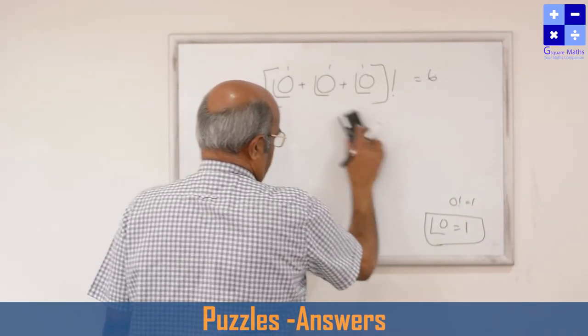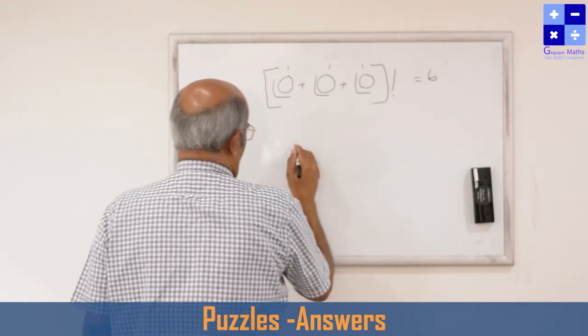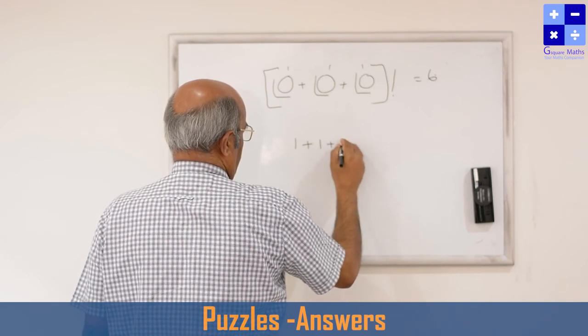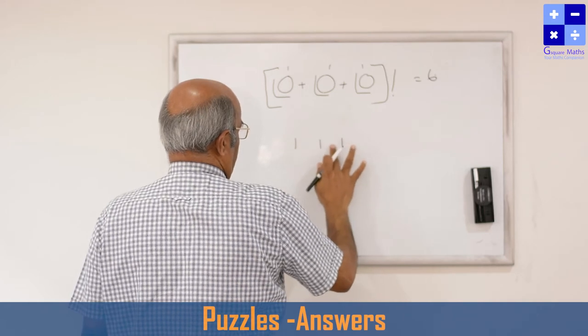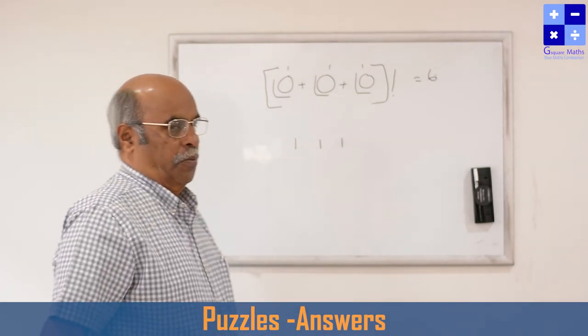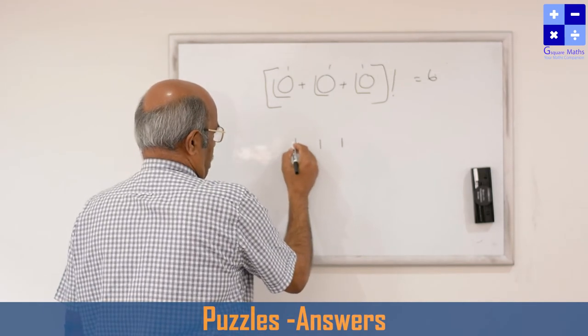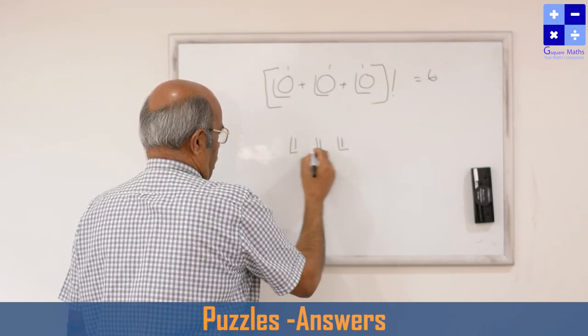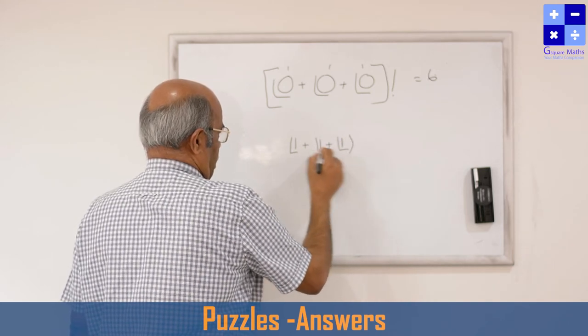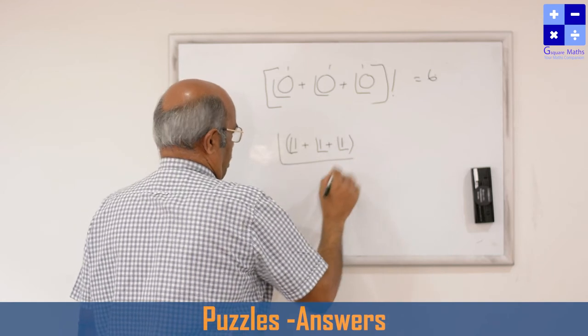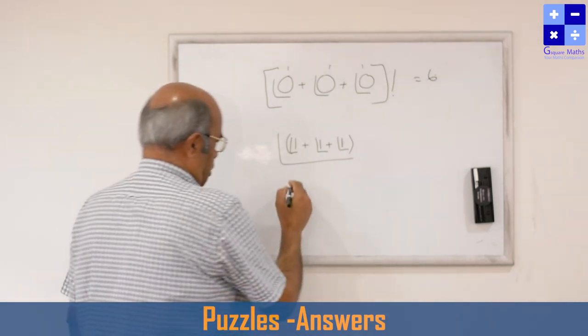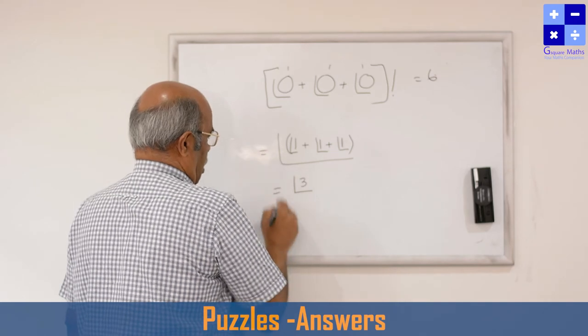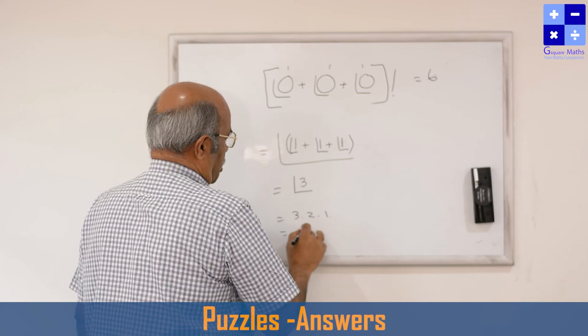Come to the second one. It will come immediately after this. How? 1 plus 1 plus 1. I asked you to put any mathematical operations to get the answer. So first introduce the factorial notation, add this, add this, put a bracket, put it in the factorial. So what it is? Factorial of 1 plus 1 plus 1, that is 3, that is 3 times 2 times 1, that is equal to 6.